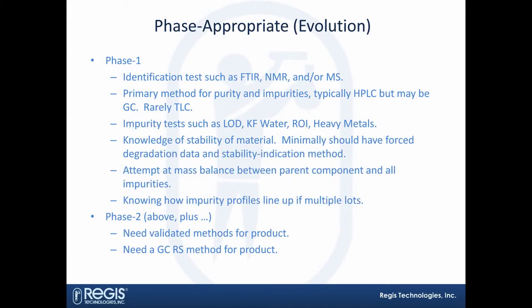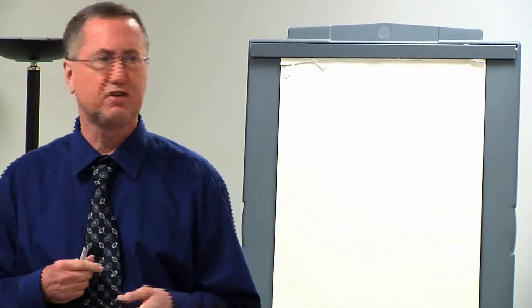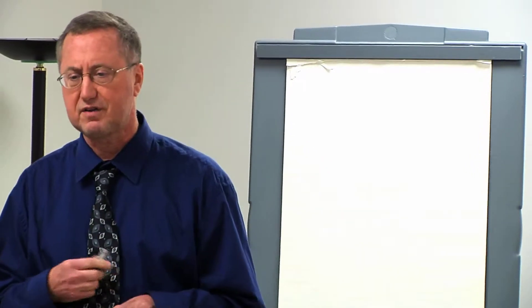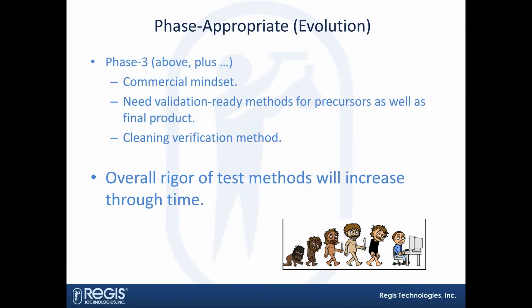It's also important to know how impurities line up for multiple lots. When you get to phase two, you just have to elevate the stringency of what's needed. For example, if you didn't have a gas chromatography method for residual solvents when you were working with phase one support, you need to have that by phase two. And you need to start thinking about validated methods for your product. When you get to phase three, as I see it, our customers tend to have a commercial mindset.